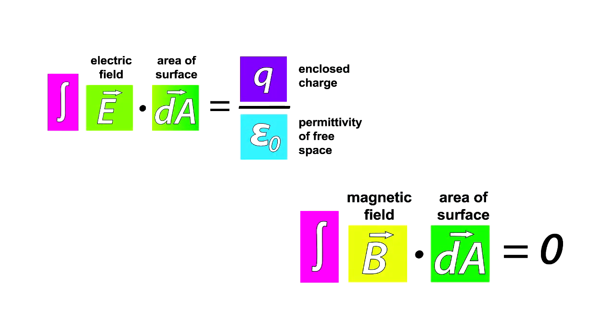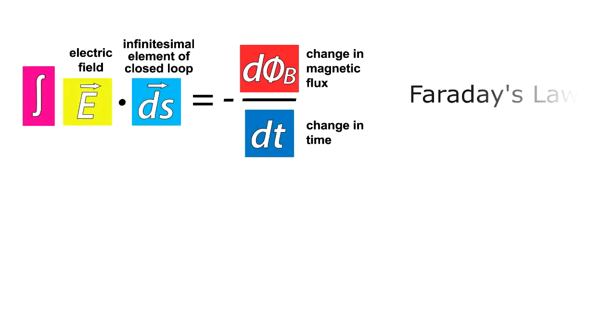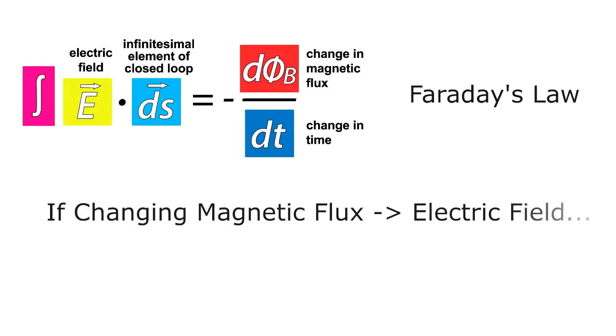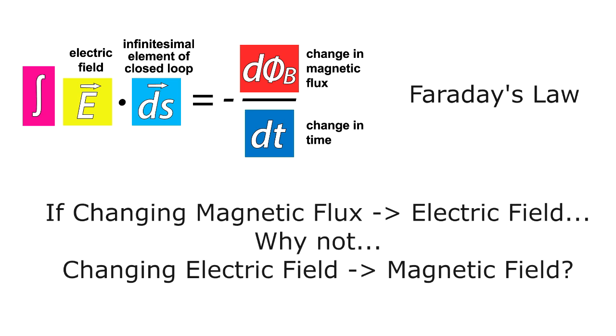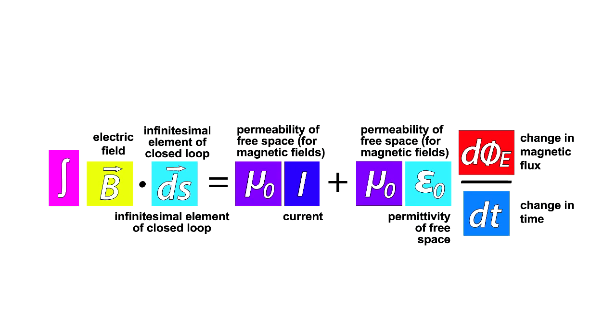Maxwell's first and second equations were very similar, so Maxwell knew there must be something complementary to Faraday's Law. After all, if a changing magnetic flux produces an electric field, why is there not a complementary law saying the reverse? That a changing electric field produces a magnetic field - and indeed it does. This was a new discovery of Maxwell.